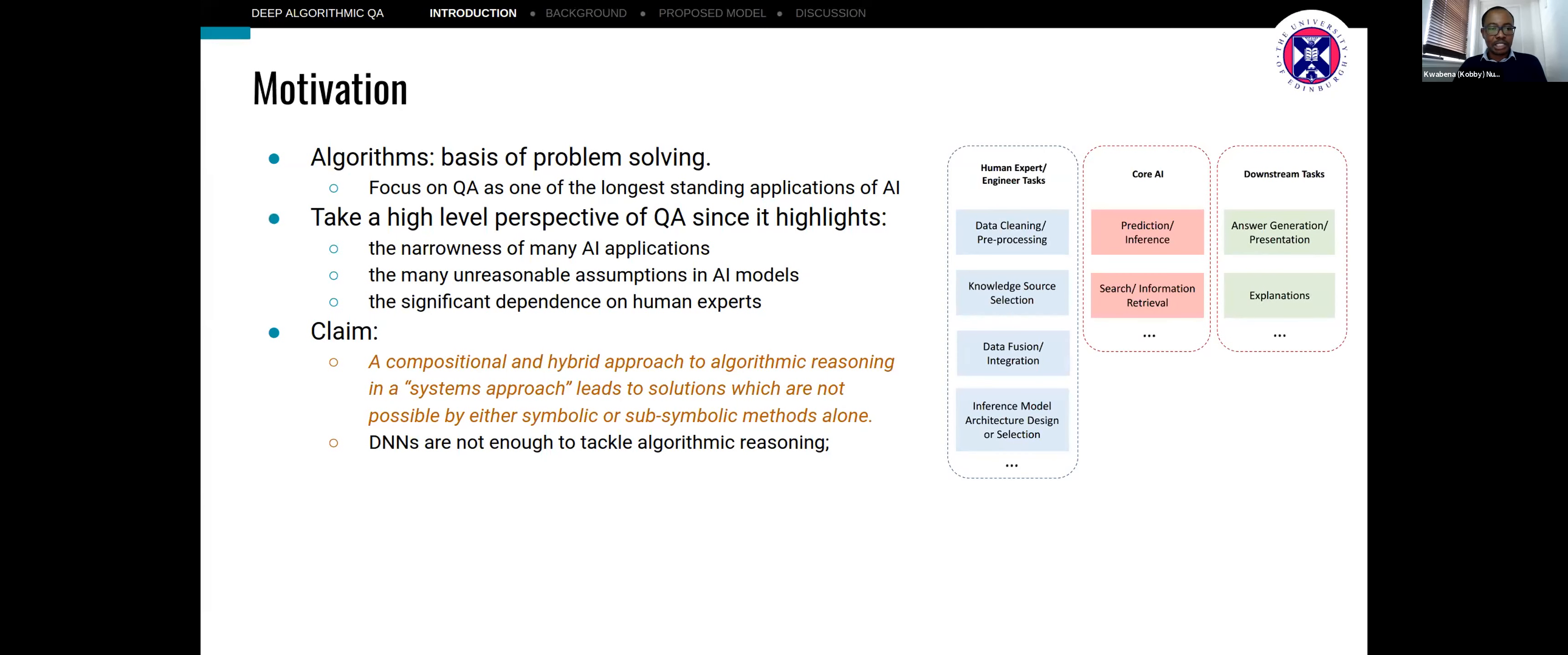This work is mostly motivated by algorithms, the basis for problem solving, and our focus is on its application to question-and-answer. One reason for doing this is to take a high level perspective on QA because it highlights how narrow many AI applications currently are. It also highlights a lot of the unreasonable assumptions that are made and the significant dependence on human experts in several parts of the pipeline.